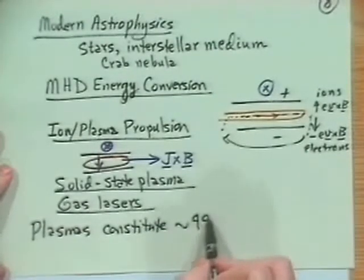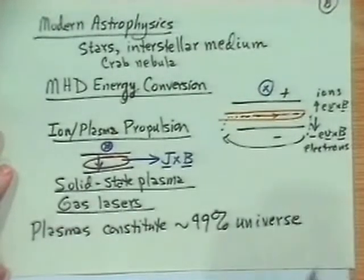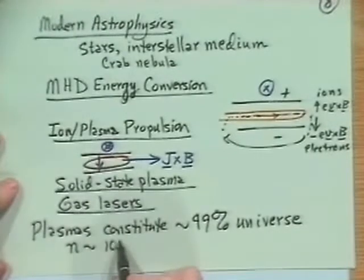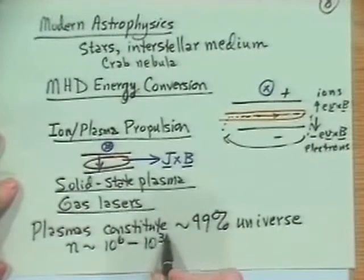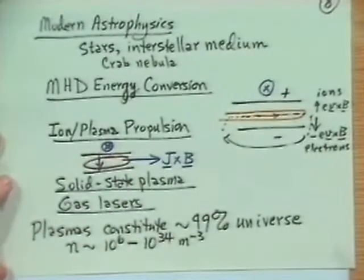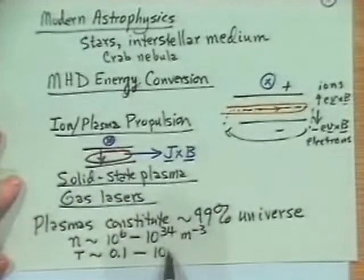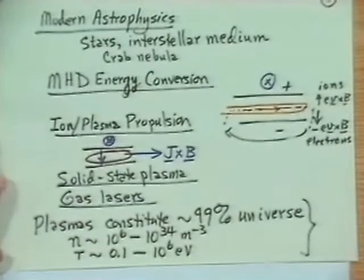In general, plasmas constitute some people have estimated 99% of the universe, and we're kind of an anomaly that live in the odd 1%. Plasmas are most of what the universe is composed of. They go from densities of 10 to the 6th to 10 to the 34th per meter cubed, 28 orders of magnitude in density. In temperatures between 0.1 eV and 10 to the 6th eV. Plasmas are pretty ubiquitous. We just happen to live on Earth which doesn't have too many plasmas. But as far as the universe is concerned, it's the more normal state. Next time we'll start talking about charged particle orbits, Chapter 2 in Chen and Bittencourt.